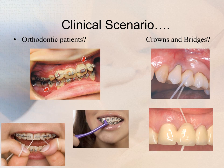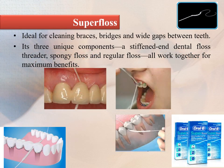For orthodontic patients with poor oral hygiene, and for prosthetic patients with crowns and bridges, super floss is the aid of choice. It is ideal for cleaning braces, bridges, and wide gaps between teeth. Its three unique components — a stiffened end dental floss threader, a spongy floss, and regular floss — all work together for maximum benefit.